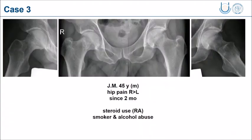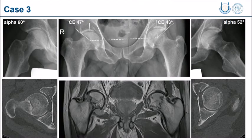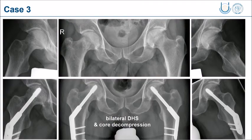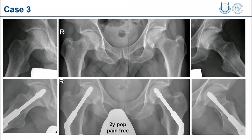The third case is a classical one - a 45-year-old with hip pain more on the right than left. He uses steroids for rheumatoid arthritis, is a heavy smoker, and drinks alcohol without limits. He has a classical situation: fractures, incipient avascular necrosis, and overcoverage on the acetabulum together with an elevated alpha angle. We were uncertain what to do. He refused the larger treatment and we just fixed the situation as it was. Now three years post-operatively he is absolutely pain-free, has no problems at all, and is satisfied with the procedure.